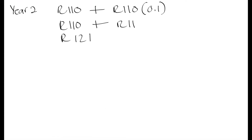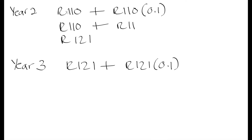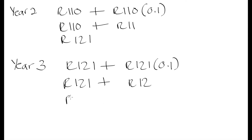If we scroll down to give ourselves more space — at year three we base the interest off of the amount from year two. So it's going to be 121 Rand plus 10% of 121 Rand. Every year we are being charged that 10% interest based on the principal plus the interest from the previous year, so the interest is compounding every year. 10% of 121 Rand is about 12 Rand, giving us approximately 133 Rand at the end of year three.